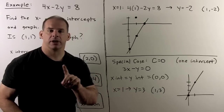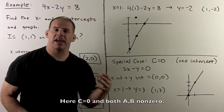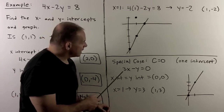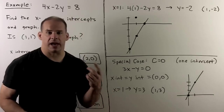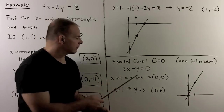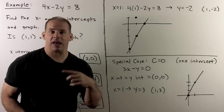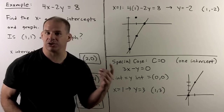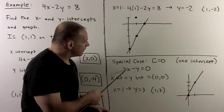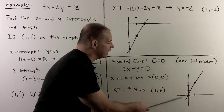A special case arises when c equals 0, giving ax plus by equals 0. Here both intercepts equal the origin (0, 0), so you only get one intercept. For example, 3x minus y equals 0. To find a second point, pick any x: letting x equal 1 gives y equal to 3, so the point (1, 3). Plot the origin and (1, 3) and connect the dots to get the line.